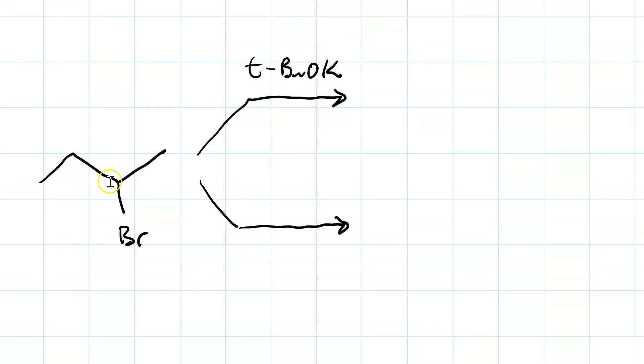If I react my 2-bromobutane with potassium tert-butoxide, I get my Hoffman product, the less substituted alkene, 1-butene.